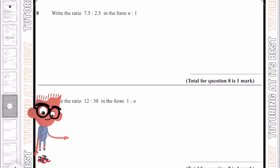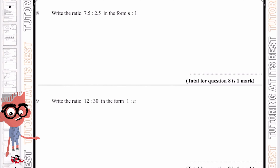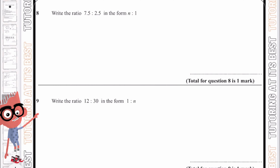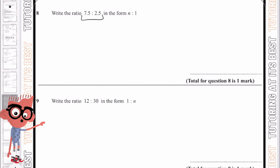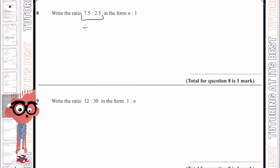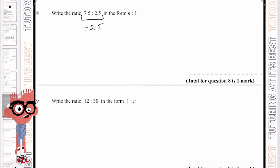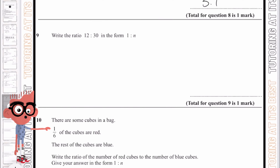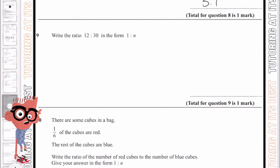Don't forget to pause the video and attempt the questions before going through them with me. For those who are ready to continue, let's go ahead. For these two questions, we're going to write the ratio in the form of n to 1. Step 1 always remains the same: find the highest common factor, which in this case is 2.5. Dividing by 2.5, we know 2.5 goes into 7.5 three times, giving us 3 to 1. For the next question, the highest common factor is 6. Dividing both by 6 gives us 2 and 5, and simplifying that gives us 1 and 2.5, so n equals 2.5.